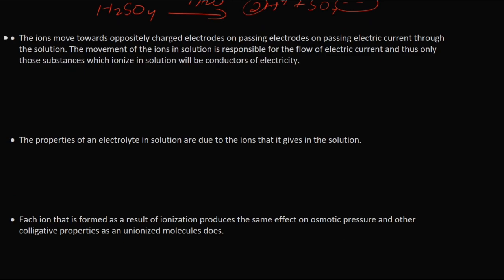Another postulate states that ions move towards oppositely charged electrodes on passing electric current through the solution. The movement of ions is responsible for the flow of electric current; thus only substances which ionize in solution will be conductors of electricity. With two electrodes — one positive terminal (anode) and one negative terminal (cathode) — the cation moves toward the cathode and the negatively charged ion moves toward the anode. When these ions move, electricity is conducted.